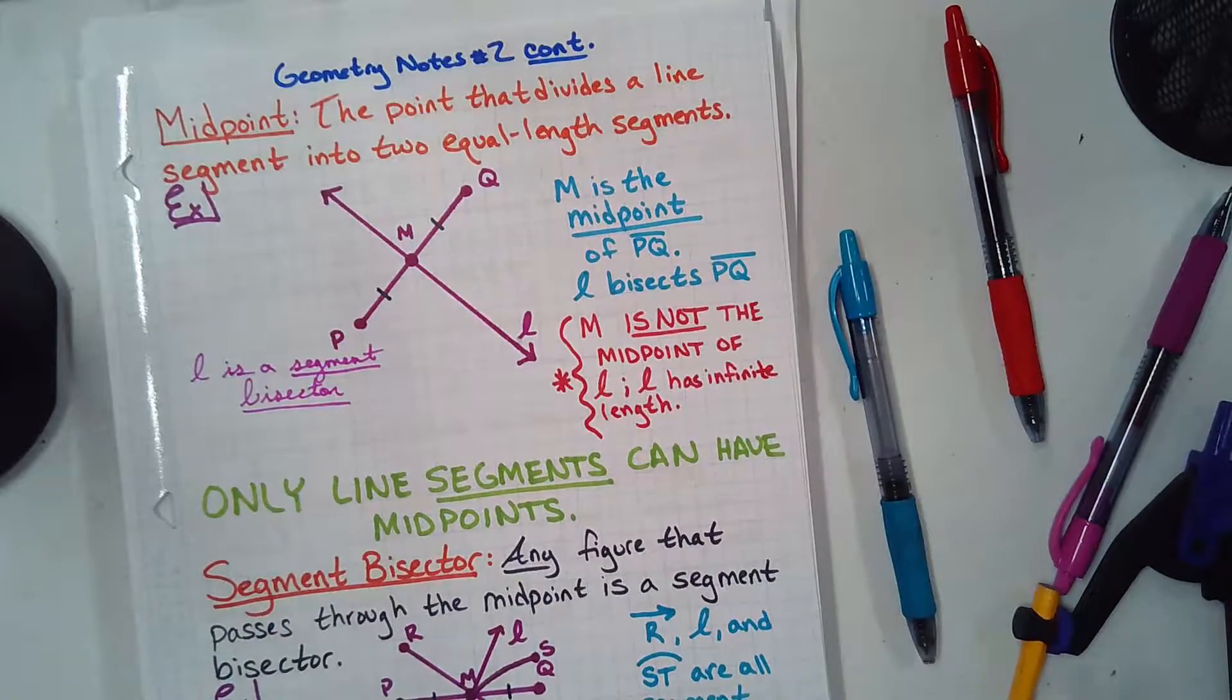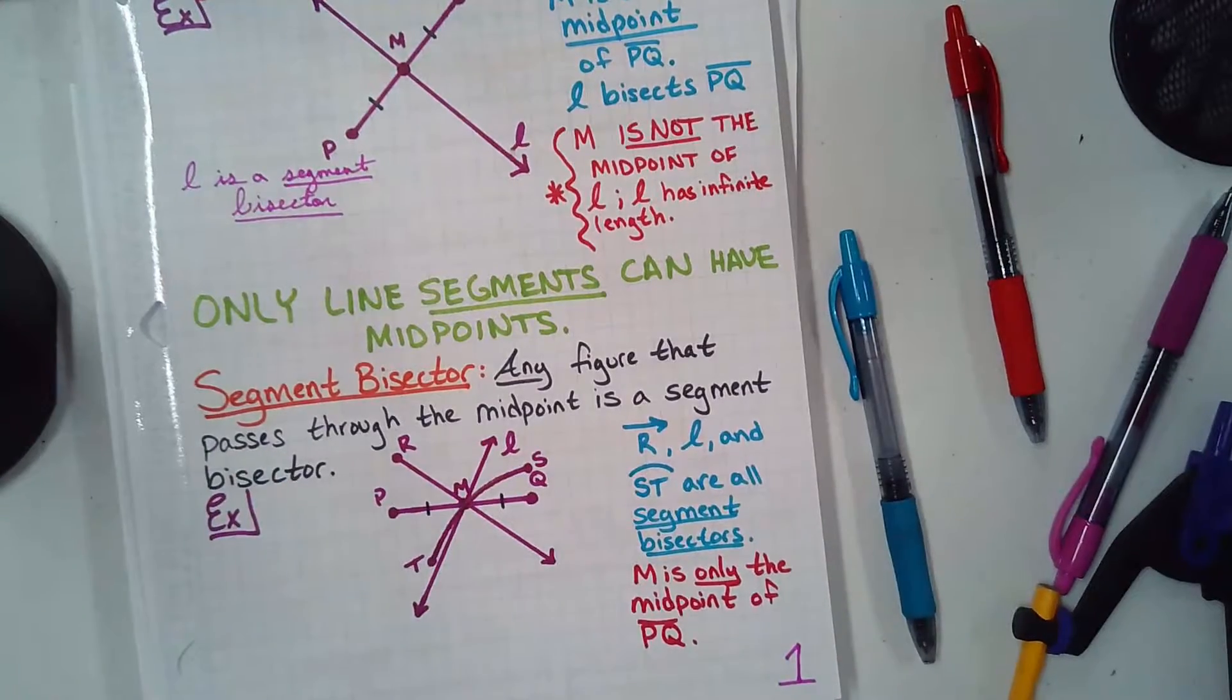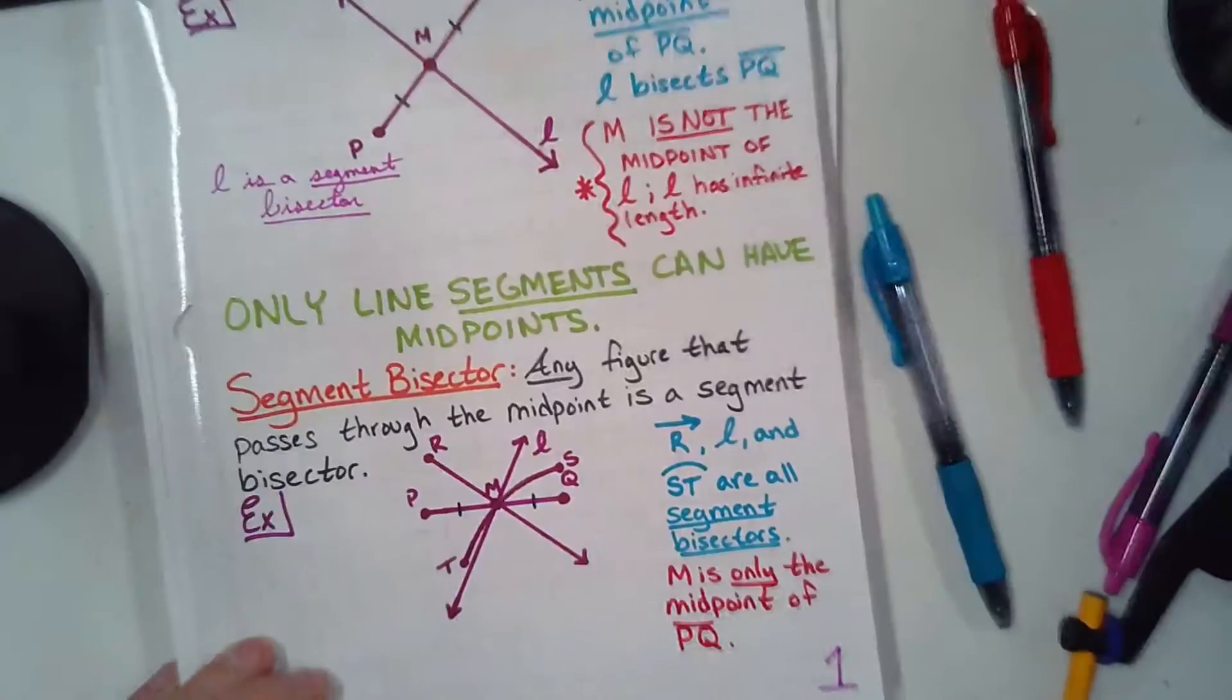So, you can have a midpoint for a segment, because it has defined length. Only line segments can have midpoints. And so, we're not going to talk about curves yet, even though we're body positive. All right, a segment bisector.